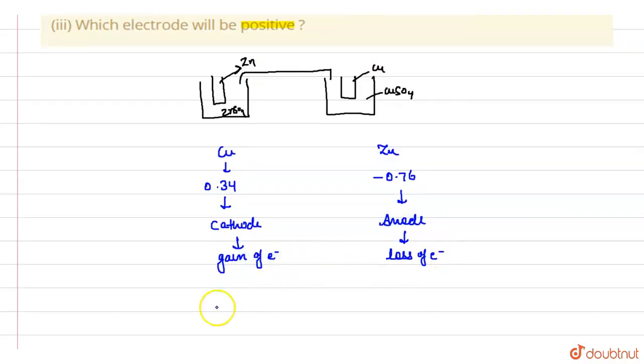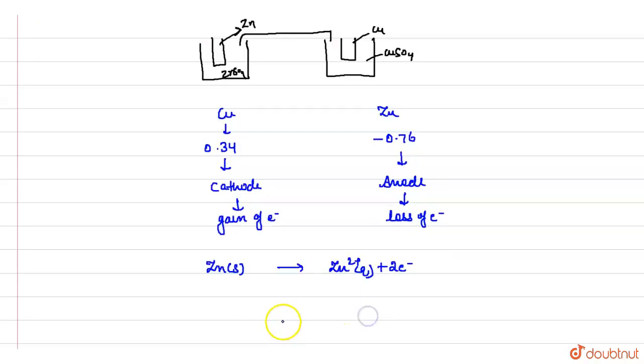So in zinc there is a loss of electrons. That means zinc solid gets converted into Zn²⁺ plus 2 electrons. If copper is gaining electrons, then Cu²⁺ aqueous takes 2 electrons and gets converted into copper solid.